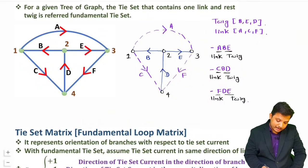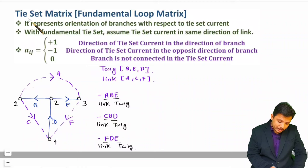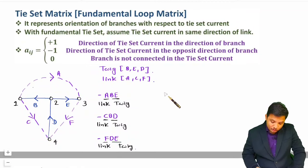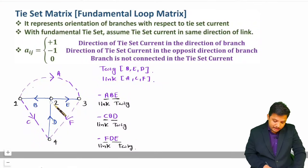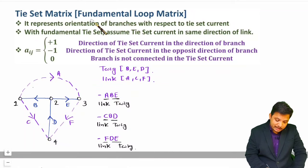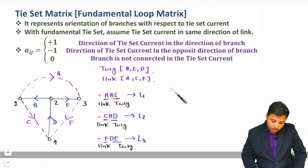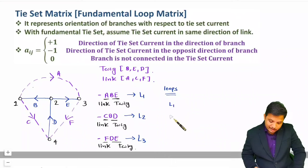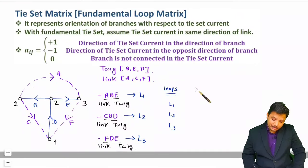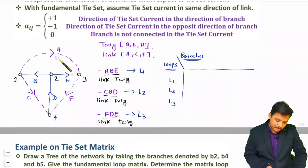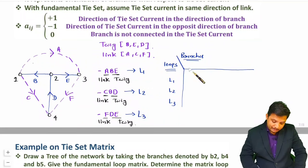Let us form the tie set matrix using the same example. Vertically you note down the fundamental tie sets — we have three fundamental loops L1, L2, and L3. Horizontally you note down all the branches. We have six total branches: A, B, C, D, E, F.